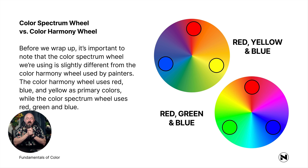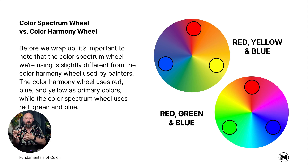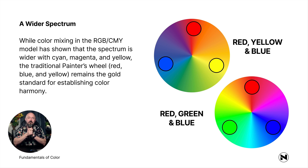Before we wrap up, I want to bring up something important: the color spectrum wheel we're using is slightly different from the color harmony wheel used by painters. The color harmony wheel uses red, blue, and yellow as the primary colors instead of red, green, and blue. That triangle is slightly different on the painter's color harmony wheel versus the color spectrum wheel. While color mixing in the RGB/CMY model has shown that the spectrum is wider with cyan, magenta, and yellow, the traditional painter's wheel — red, blue, and yellow — remains the gold standard for establishing color harmony.